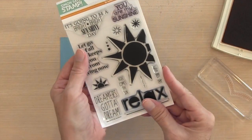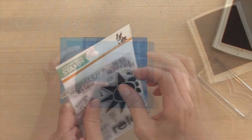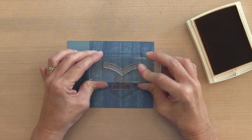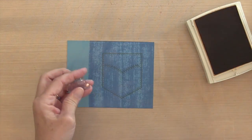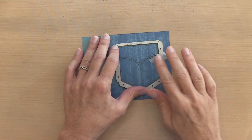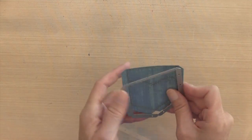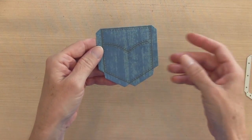And then I'm going to grab my sentiment from the My Sunshine set by Simon Says Stamp. And I'm just using it, I'm not going to stamp it yet. I'm just using it to place that other stitching line. And then I'm going to put my die on here and secure it with some surgical tape and run it through the Big Shot.